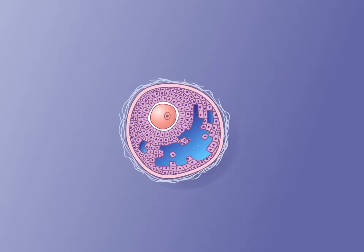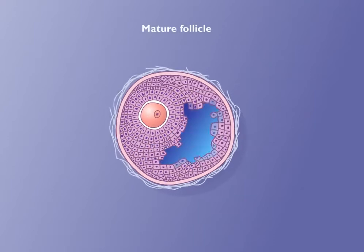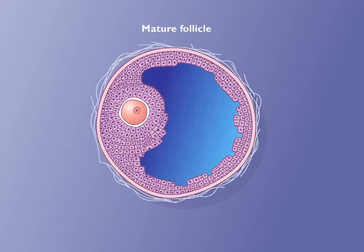The structure is called a mature follicle when the fluid-filled vesicles form a single antrum. At full maturity, the oocyte is located in the cumulus mass.